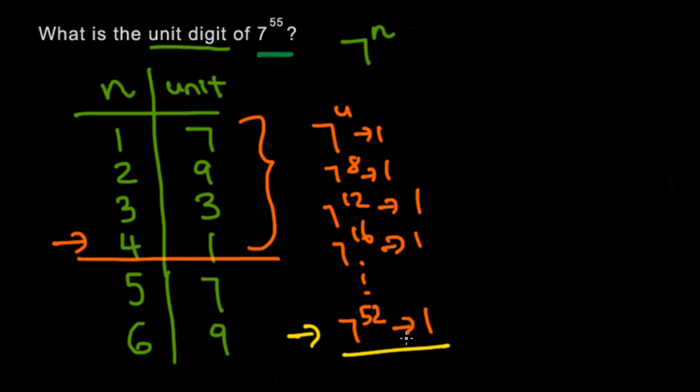Which means that 7 to the power of 53 will end in 7, because you're multiplying one more 7. And then 7 to the power of 54 will end in 9. And then finally what we want, 7 to the power of 55 will end in 3.